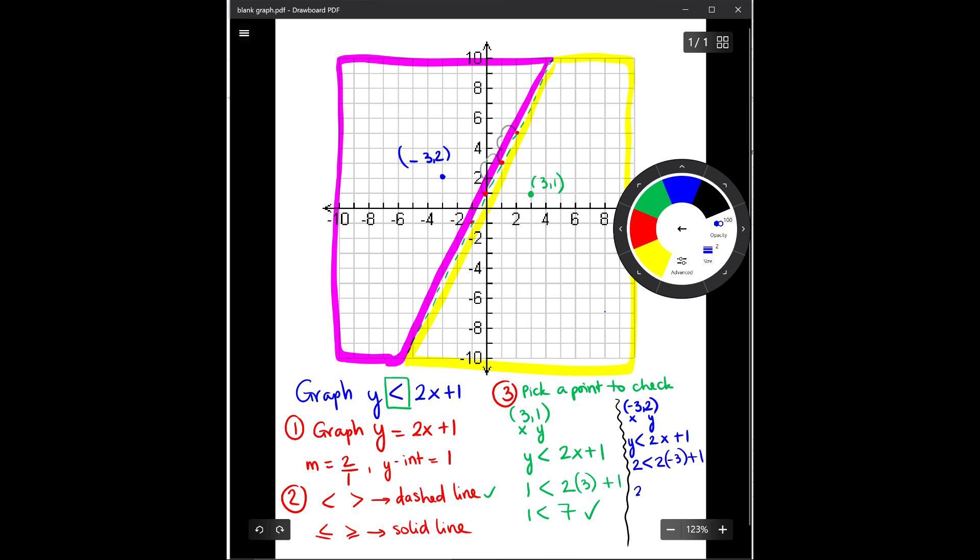So now I have 2 is less than 2 times negative 3 is negative 6, plus 1 is negative 5. So 2 is less than negative 5. That is not true, or is false.